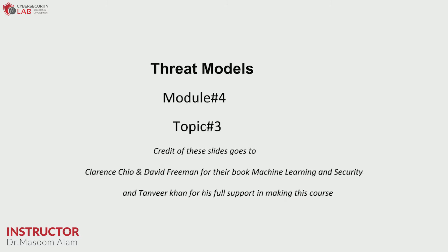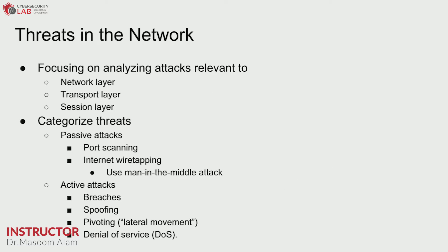Welcome to Topic 3 of Module 4. We look at the threat models that exist in the network and how to protect the network from all the threats. Primarily, we have two types of threats: active threats and passive threats. Passive threats involve attacks like port scanning, internet wiretapping, or man-in-the-middle attacks. Active threats include breaches, spoofing, and pivoting done inside the network.